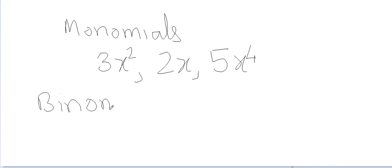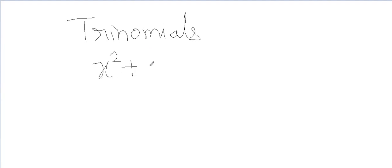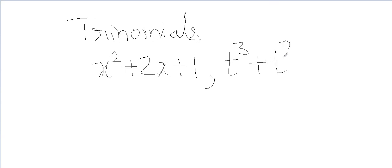Similarly, binomials are polynomials which have two terms, like x plus 1, t squared plus 2t, and u to the power 5 plus u. All three have only two terms, hence they are called binomials. Trinomials have three terms — for example, x squared plus 2x plus 1 is a trinomial, and t cubed plus t squared plus 5 is also a trinomial.